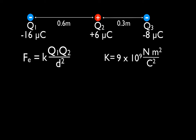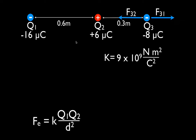Q3 is a negative charge and Q1 is also a negative charge. Therefore those charges are going to repel each other, and the direction of the force on Q3 from Q1 is to the right — we'll call that F31. Now let's look at the direction of the force on Q3 from Q2. Q3 is negative and Q2 is positive, therefore they're going to be attracted to each other, and the force on Q3 from Q2 is to the left — we'll call that F32. We had to determine the force on Q3 from each of the two other charges individually.